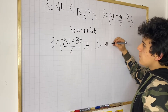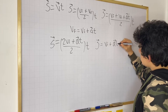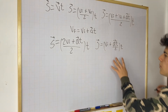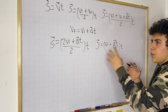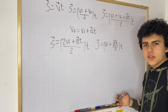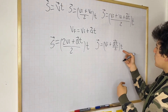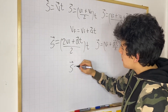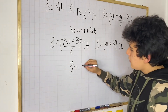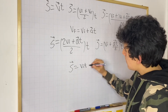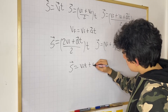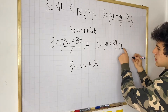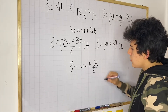After distributing, we get: displacement equals (initial velocity plus acceleration times time) divided by 2, all multiplied by time. You may start to see the pattern leading to a very common physics equation. Distributing t into the terms inside the parentheses gives us: displacement equals (t times initial velocity plus acceleration times t squared), all divided by 2.